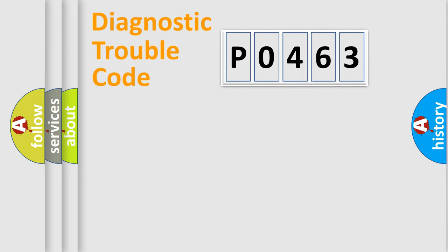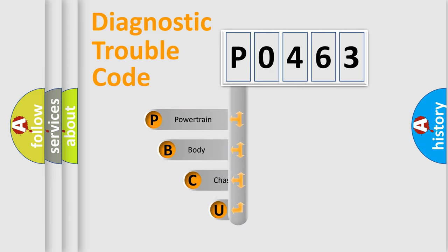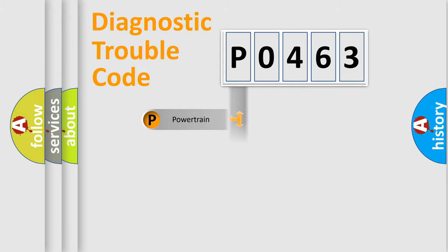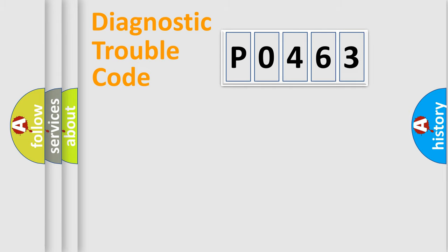Let's do this. First, let's look at the history of diagnostic fault code composition according to the OBD-II protocol, which is unified for all automakers since 2000. We divide the electric system of the automobile into four basic units: Powertrain, Body, Chassis, and Network.